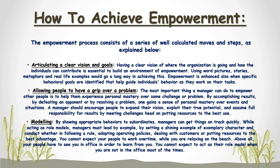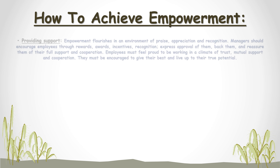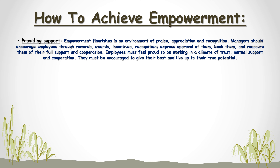Third, modeling — by showing appropriate behaviors to subordinates, managers can get things on track quickly. While acting as role models, managers must lead by example, setting a shining example of exemplary character and conduct in following rules, adopting operating policies, dealing with customers, and putting resources to best advantage. You cannot expect people to work overtime while you are relaxing on the beach; your people need to see you in the office to learn from you. Fourth, providing support — empowerment flourishes in an environment of praise, appreciation, and recognition. Managers should encourage employees through rewards, awards, incentives, recognition, express approval, back them, and reassure them of full support. Employees must feel proud to work in a climate of trust, mutual support, and cooperation, encouraged to give their best.